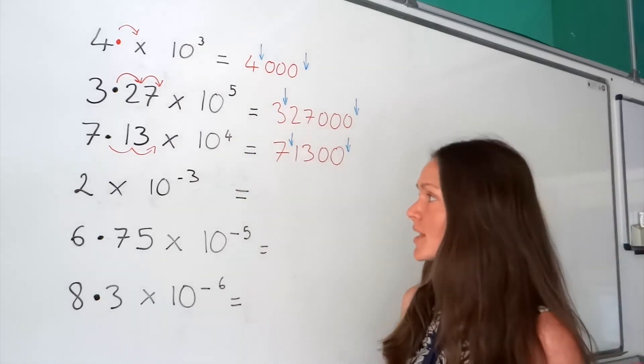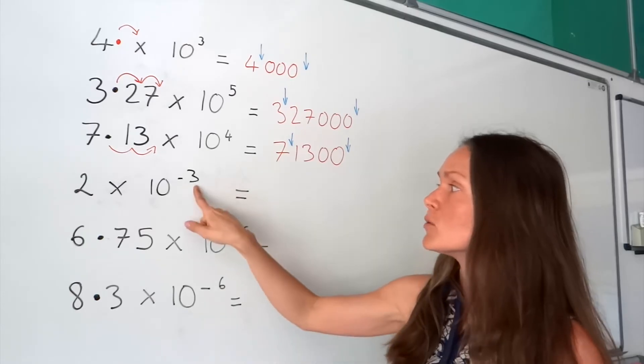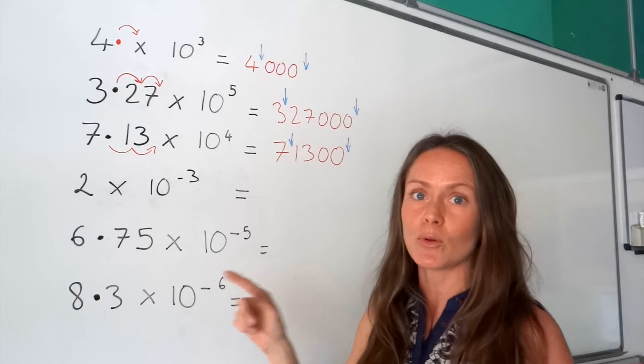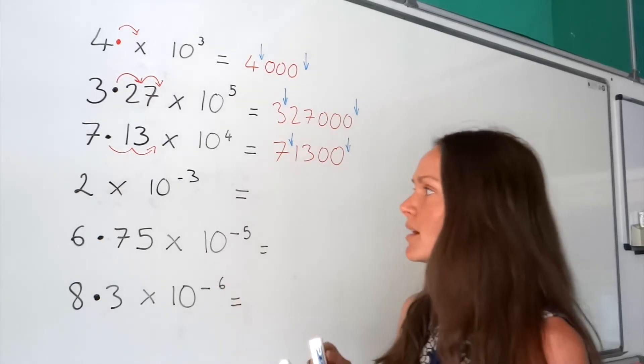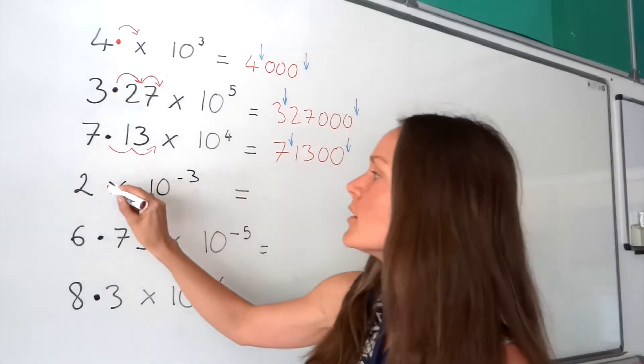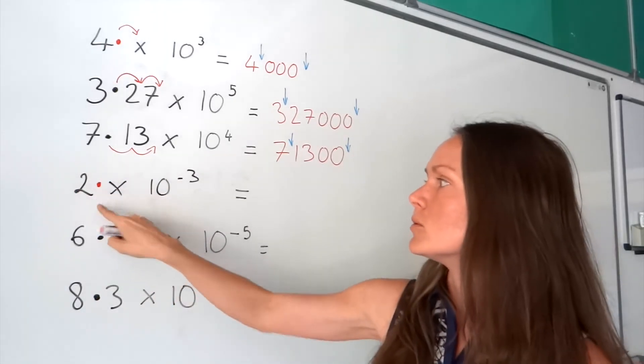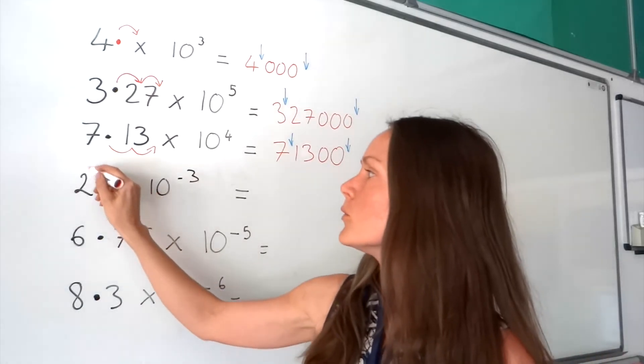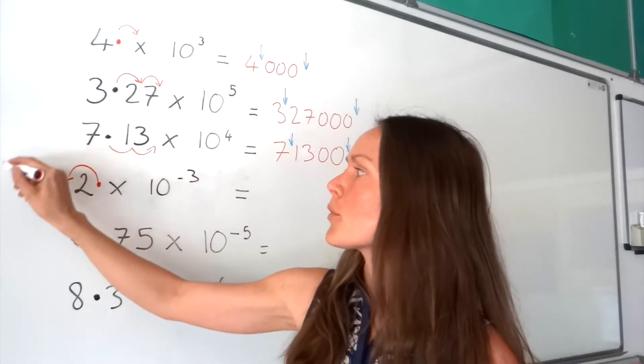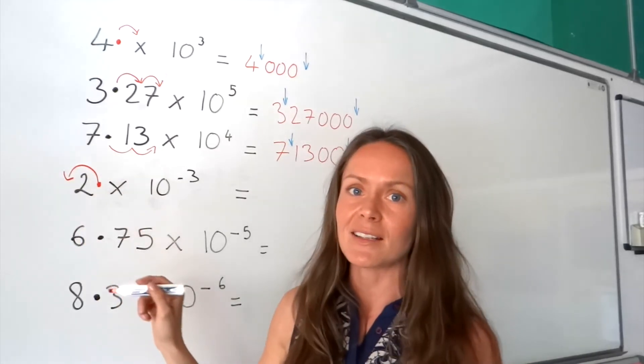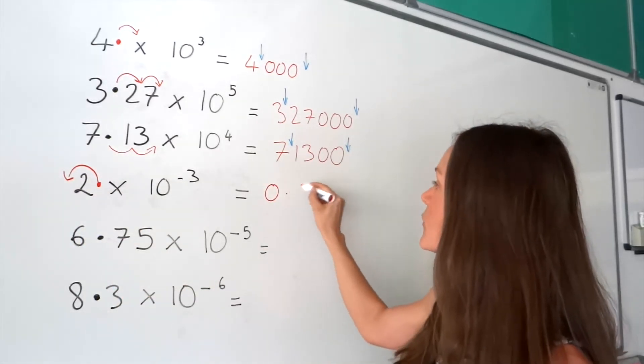On to the small numbers. This time, the decimal still moves three places, except now the decimal is going to move to the left so that we get a small number. Remember, if there's no decimal in this number here, just remember that it's after the digit 2. So, we're going to move 1, 2, 3. Remember, when there are no numbers there, we need to add in zeros.